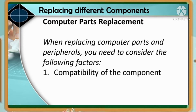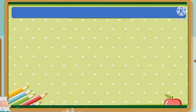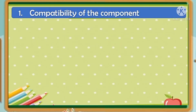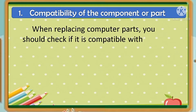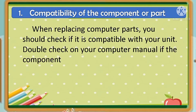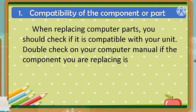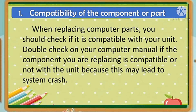First, compatibility of the components or parts. Consider the components specification and components from the factory. When replacing computer parts, you should check if it is compatible with your unit. Double-check your computer manual if the component you are replacing is compatible or not with the unit, because this may lead to a system crash.